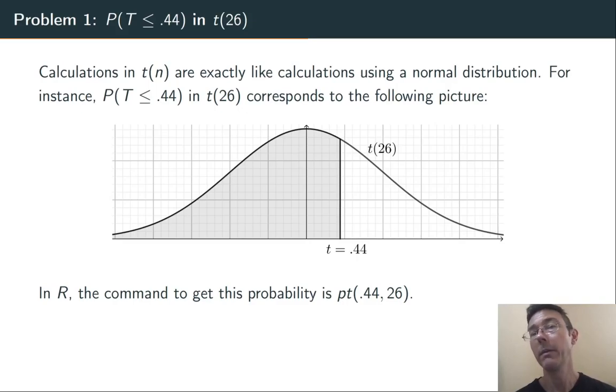I strongly recommend against doing t-calculations using tables, for example, tables that you might find in the back of an introductory stats book. It's possible, but it's hard and less accurate. I strongly recommend using R. In R, the command that corresponds to the CDF of a t-distribution is PT.